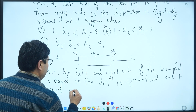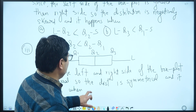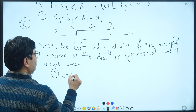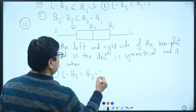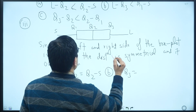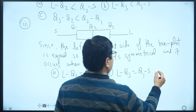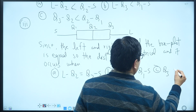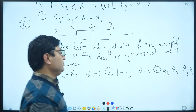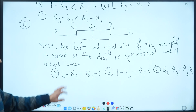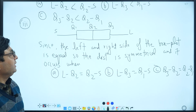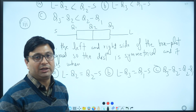For a symmetrical distribution, the left and right sides of the box plot are equal. It occurs when: L minus Q2 equals Q2 minus S, L minus Q3 equals Q1 minus S, and Q3 minus Q2 equals Q2 minus Q1. Since both sides are equal, the distribution is symmetrical.